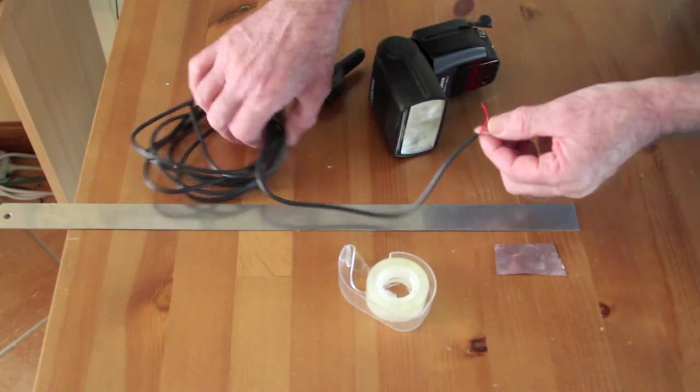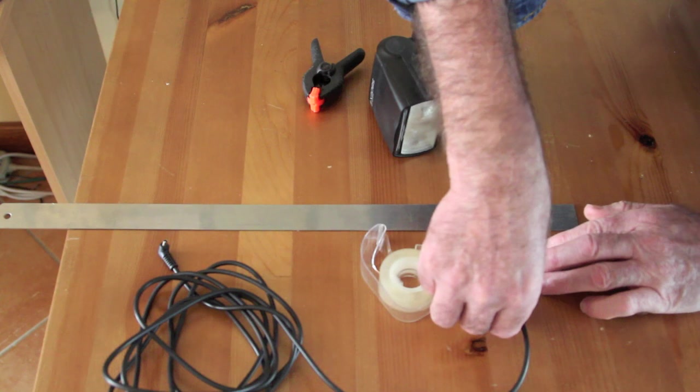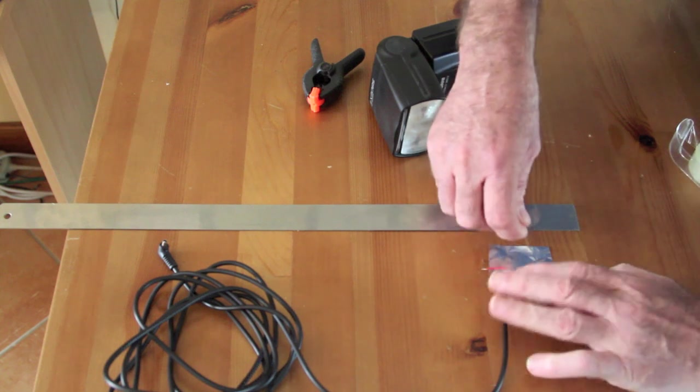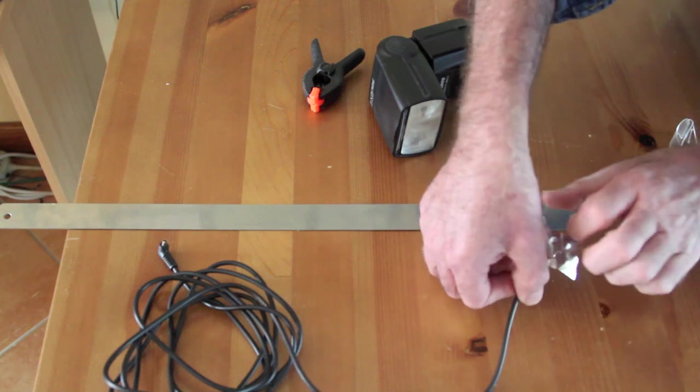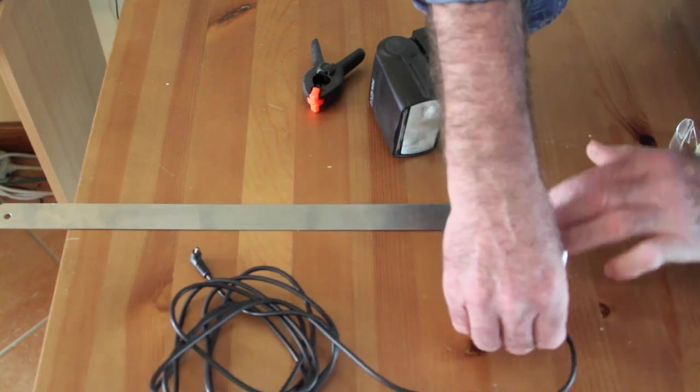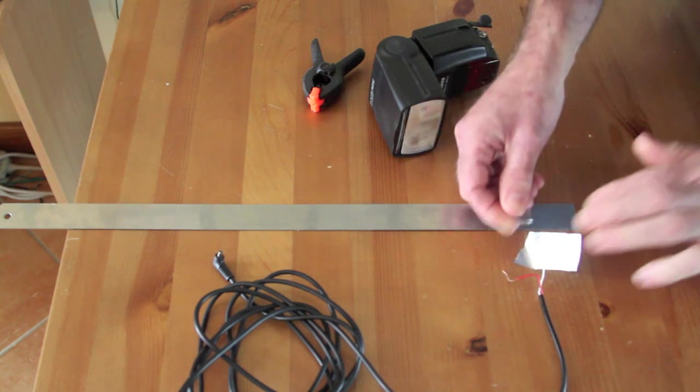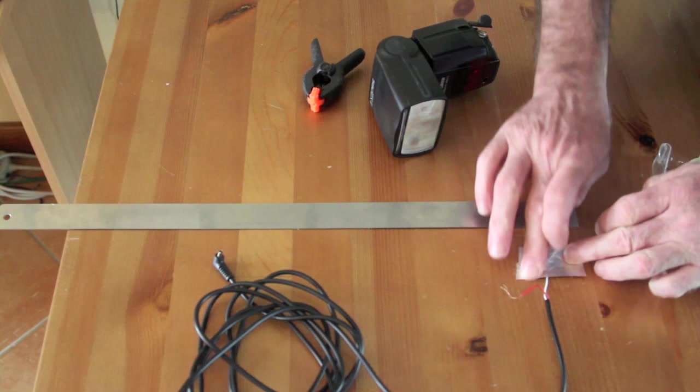So what I'm going to do is attach that wire to this, which now becomes a contact. I turn it over and attach the silver paper to the table, keeping that wire out the way.